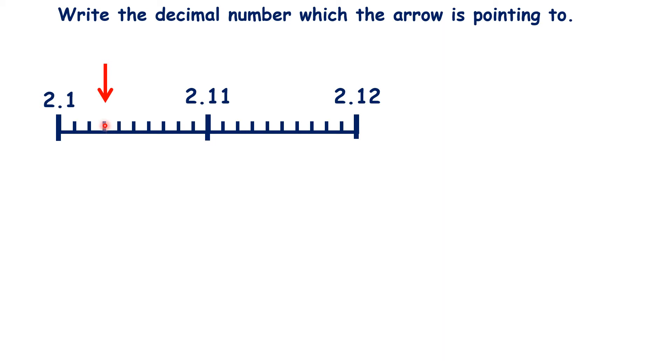So here, we have 2.103. What do we have here? 2.109. And here, 2.113. And here, 2.119.